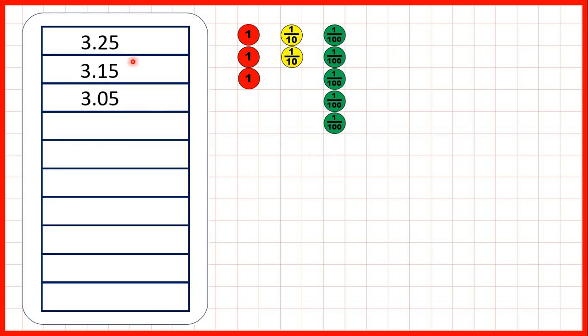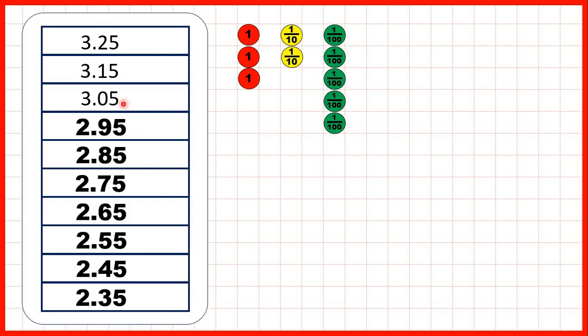Now, 3.25, 3.15, 3.05. What are the next seven numbers in this sequence? Well, this one's slightly different, because we're counting back in tenths rather than in hundredths.